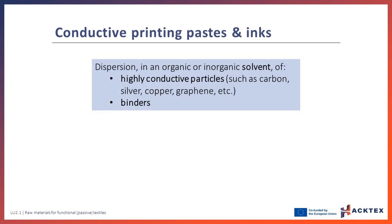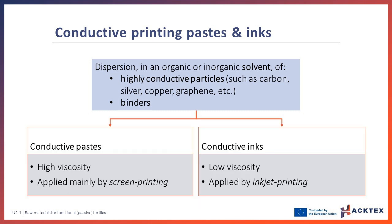Conductive pastes and inks consist of a dispersion in an organic or inorganic solvent of highly conductive particles such as carbon, silver, gold, or graphene, and binders such as suitable polyester or epoxy resins. The main difference between conductive pastes and conductive inks is their viscosity, with pastes being much more viscous than inks. Due to this, they are applied with appropriate methods such as screen printing for pastes and inkjet printing for inks.